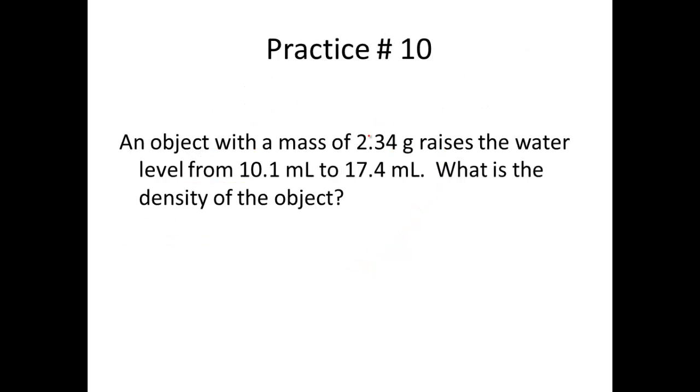So I've got a couple problems that we want to work through. Practice problem 10. An object with a mass of 2.34 grams raises the water level from 10.1 milliliters to 17.4 milliliters. What is the density of the object? So the first thing we're going to do is we'll always look through the problem to see what information can help us. 2.34 grams would be a mass unit. The water level rose from 10.1 to 17.4 milliliters. Both of these are volume. What is the density of the object? We're going to circle this one because that's what it's asking us to solve for.